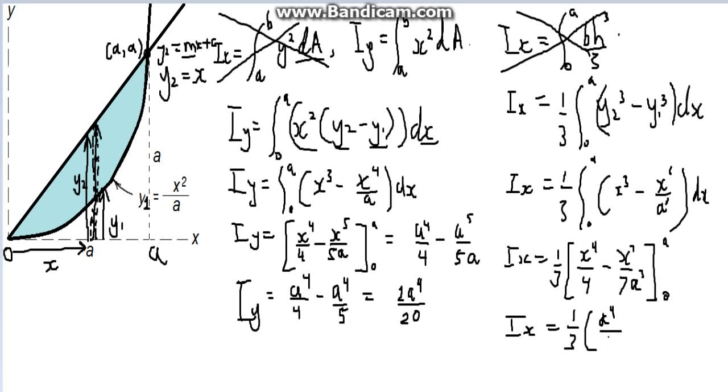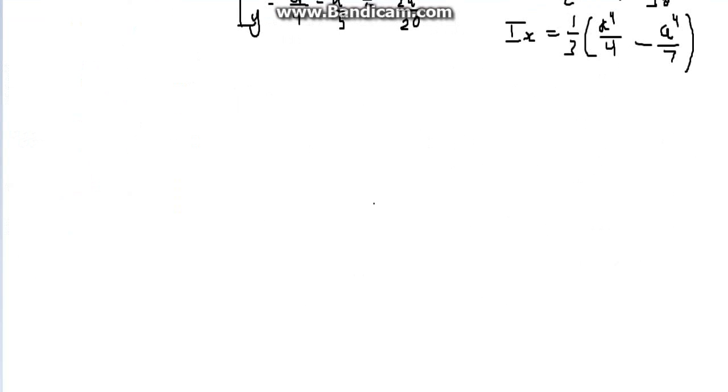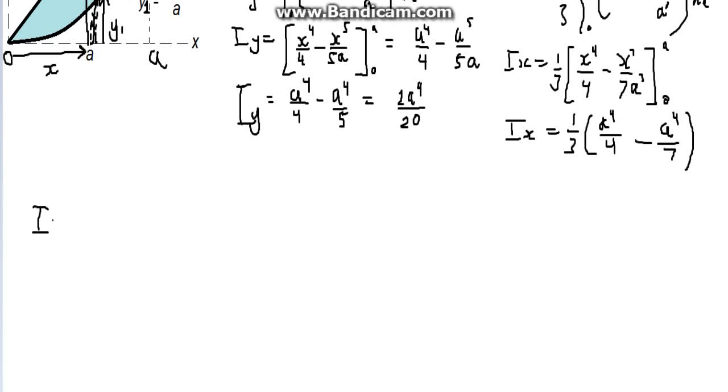Substitute a to the power of 4 divided by 4, subtracts a to the power of 4 divided by 7. a to the power of 7 divided by a to the power of 3, moving on. Ix value now equals 1 on 3, 7 takes 4 is 3, a to the power of 4 divided by 28. 3's cancel out. The answer is a to the power of 4 divided by 28. There we go.